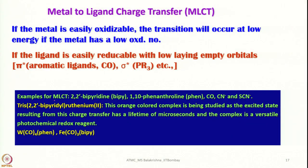Examples of ligands that facilitate MLCT include 2,2'-bipyridine, 1,10-phenanthroline, carbon monoxide, cyanide, and thiocyanide. A well-known orange-colored complex — for example a Ru(II) bipyridyl complex — is studied because the excited state resulting from MLCT has a lifetime of microseconds, making it a versatile photochemical redox reagent. Other examples include tetracarbonyl-phenanthroline tungsten and tricarbonyl-bipyridyl iron complexes. In the next lecture we will discuss ligand-to-metal charge transfer and then move on to d-d transitions in more detail.